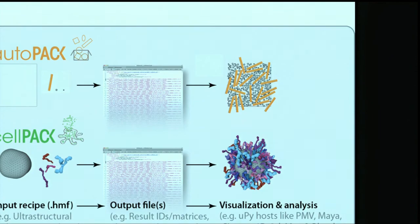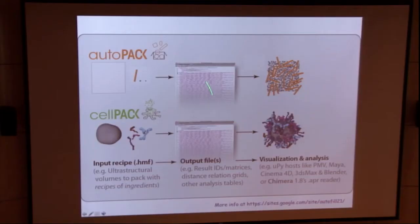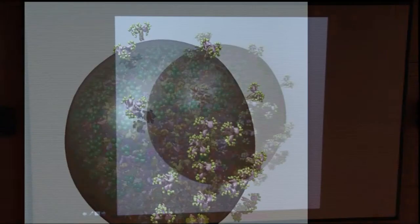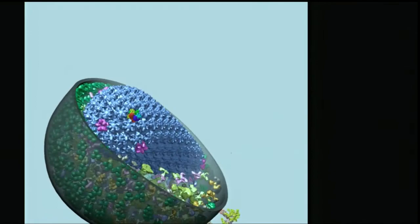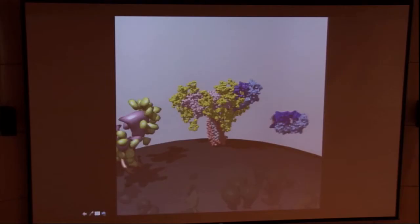So, we combine these together, generate output files, and then do visualization and analysis on the results, using a number of tools, but in the case that I'm going to be showing you, Chimera. So, here's an animation that was generated with Chimera from the output of AutoPak and CellPak. This is an HIV, a model of HIV Caps virus, showing the HIV spikes on the surface. A couple of broadly neutralizing antibodies. Here's the HIV capsid. Here's one of the capsid proteins.